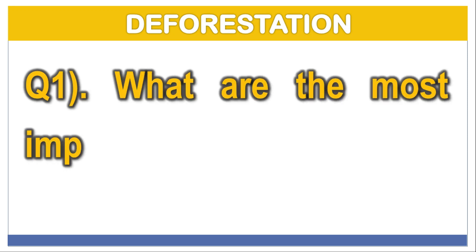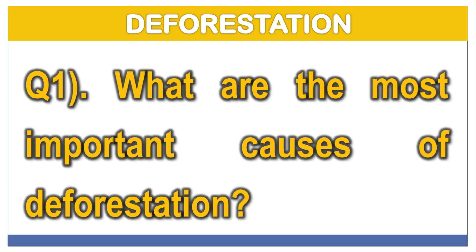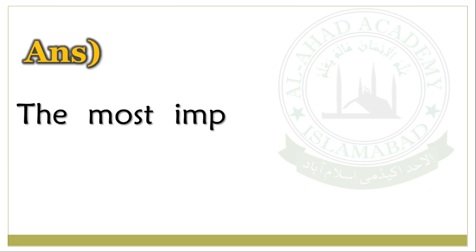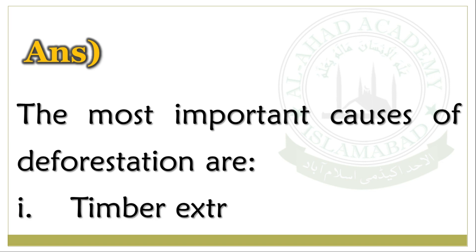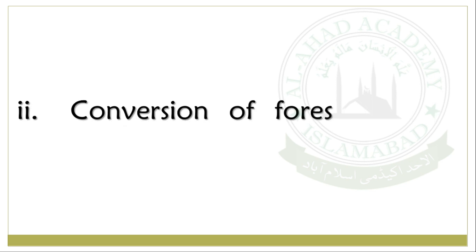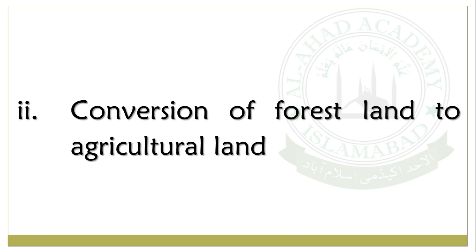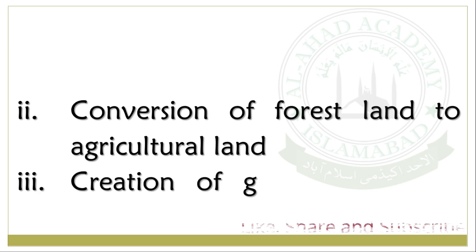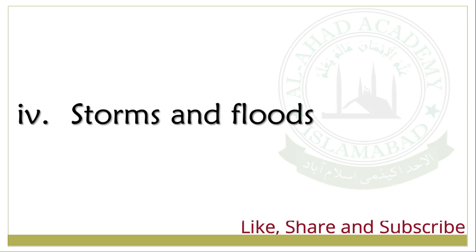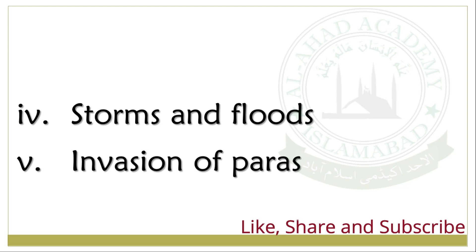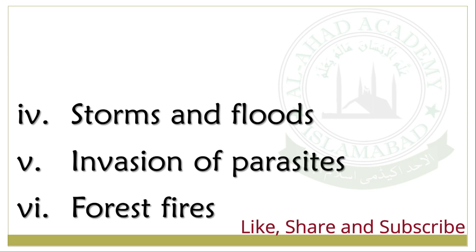Question No. 1: What are the most important causes of deforestation? Answer: The most important causes of deforestation are timber extraction, conversion of forest land to agricultural land, creation of grazing land for livestock, storms and floods, invasion of parasites, and forest fires.